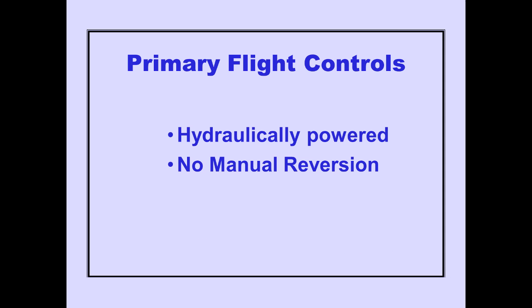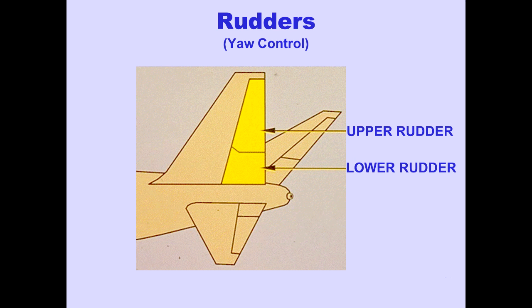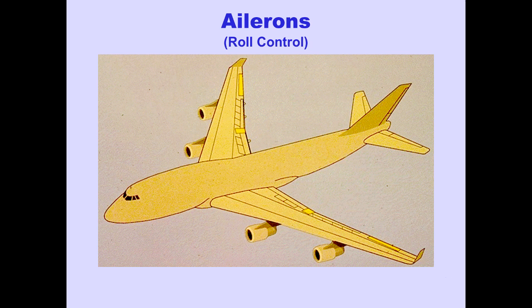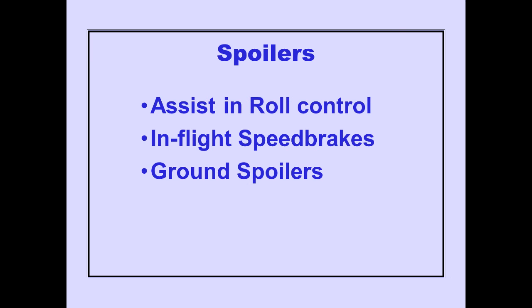The primary flight controls are hydraulically powered. There is no manual reversion. An upper and lower rudder move together to provide yaw control. The horizontal stabilizer has inboard and outboard elevators, which move together to control airplane pitch. Inboard and outboard ailerons on each wing control roll. Spoilers assist the ailerons in roll control, and also function as in-flight speed brakes and ground spoilers.